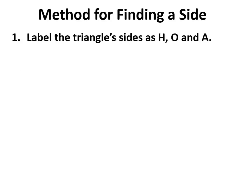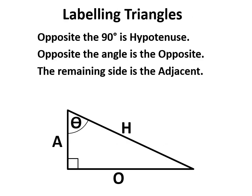Finding sides. First up, label as we always do. Opposite the 90 degrees is our hypotenuse, opposite the angle in question is our opposite, and beside our angle in question is the adjacent.